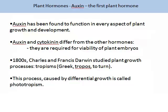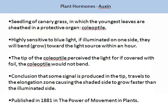It is perhaps fitting that we should start with auxin as this was the first plant hormone discovered. Auxin has been found to function in every aspect of plant growth and development. Auxin works alongside cytokinin, and these hormones differ from other hormones as they are required for a variety of plant embryo processes. In the 1800s, Charles and Francis Darwin studied plant growth processes called tropism — the Greek 'tropis' means to turn. Using the canary grass seedling, the interaction of auxin and plant growth and development can be explored.